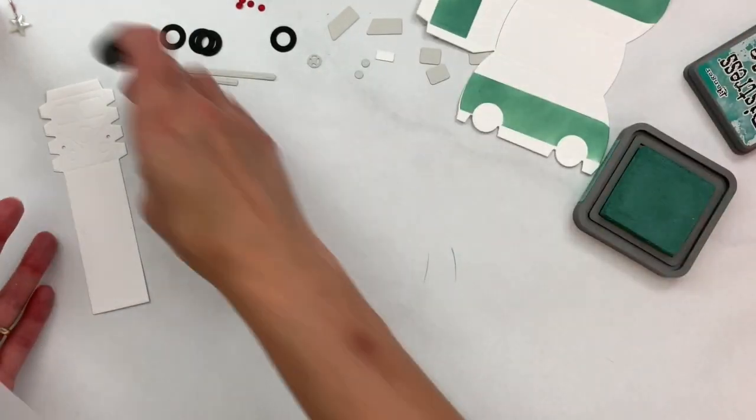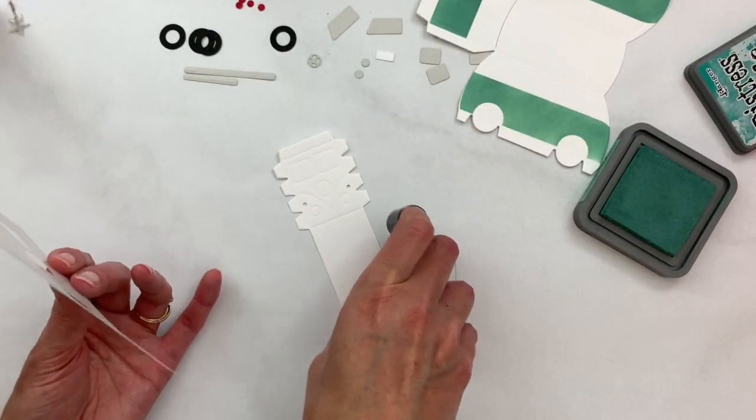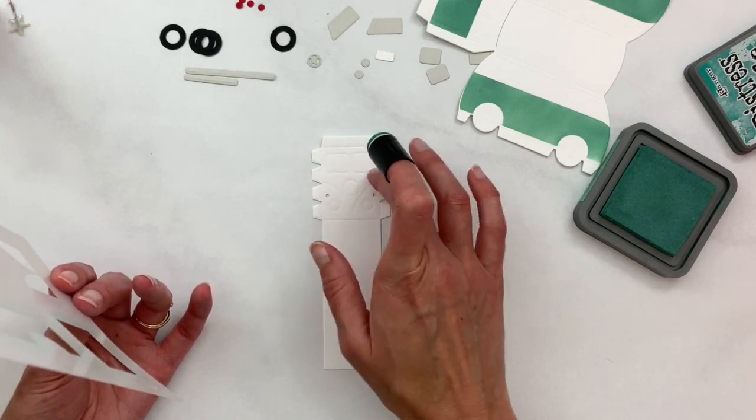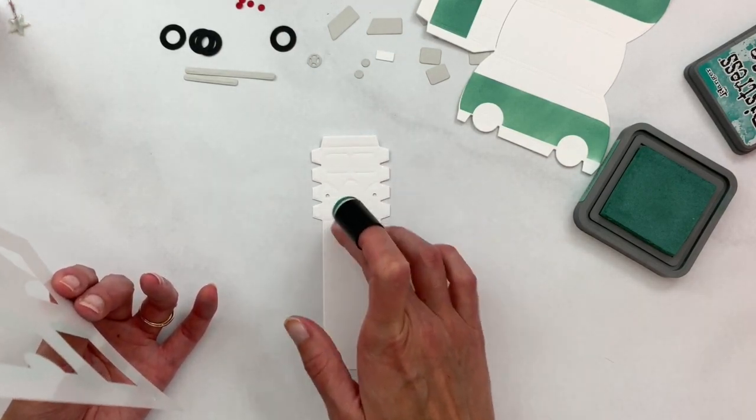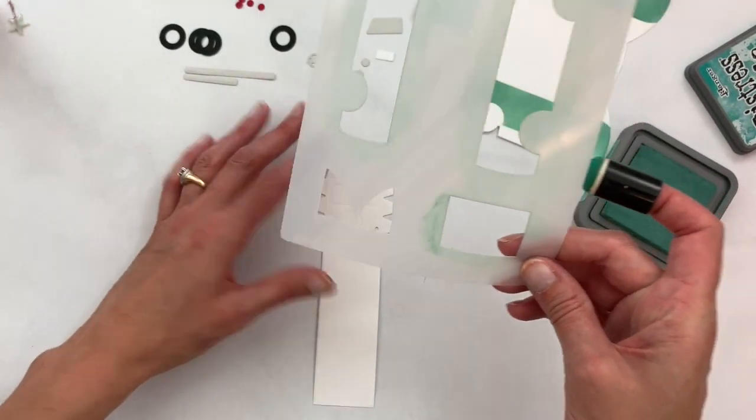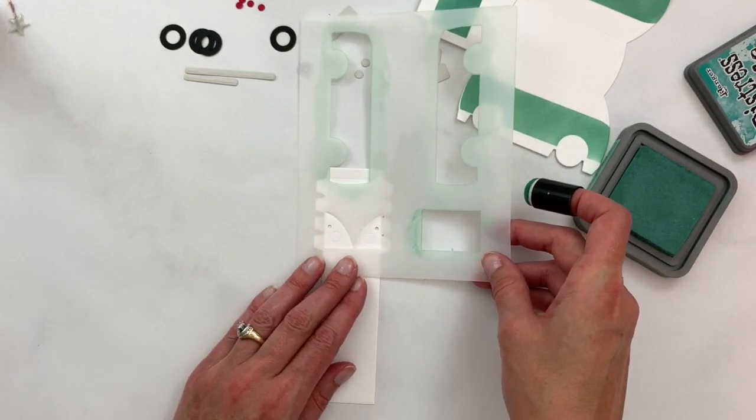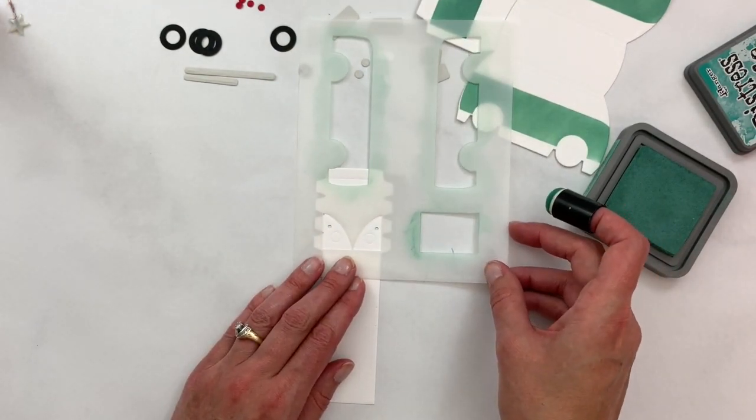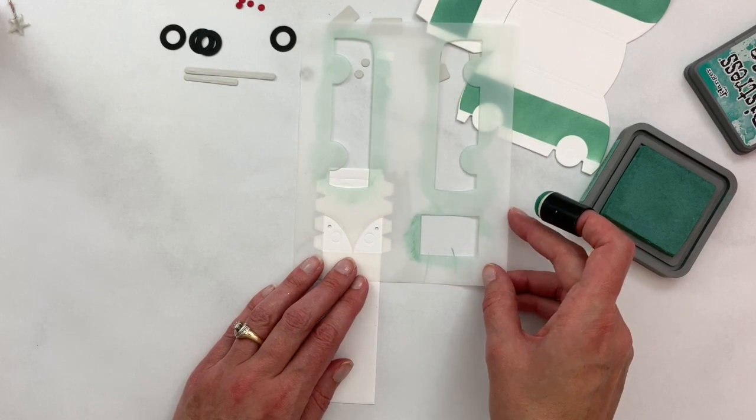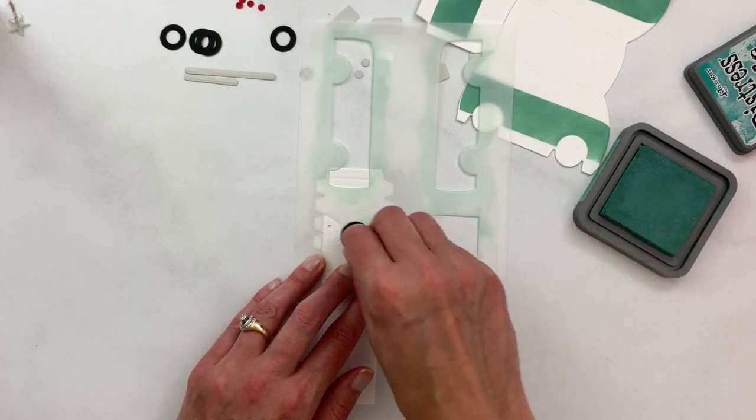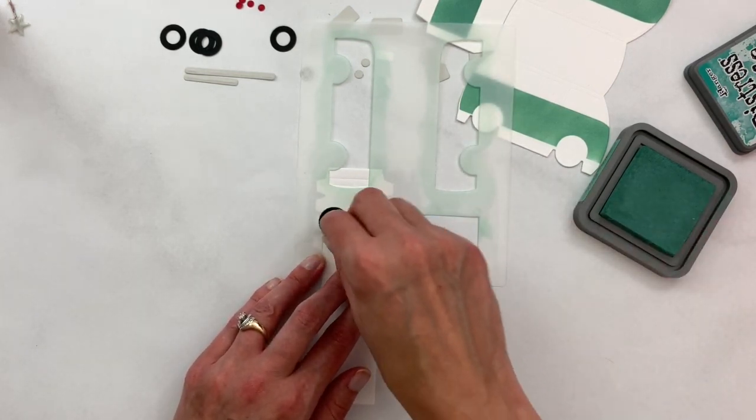And then there's one more piece and that is the front. This is the front of the van - the two front windows are here, the hood ornament and the headlights. And so this little arched piece right here, looks like an M almost, that will line up with that and you can sponge your color right to that area.